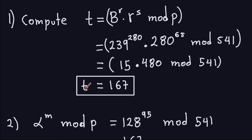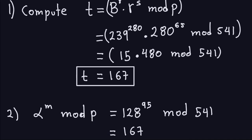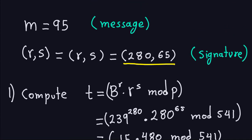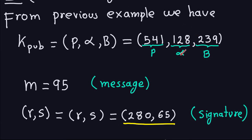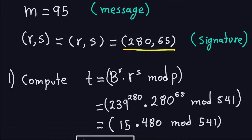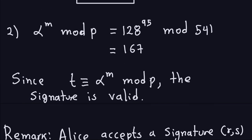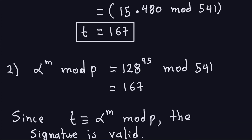The next thing is I'm going to compare this T to Alpha, the generator to the message, modulo the prime number, and if they happen to be the same, then that means that the signature is valid. Alpha, in this case, is 128. 128 to the M. M is the message, which is 95, and this is modulo the prime. You get 167, which is exactly the same number.